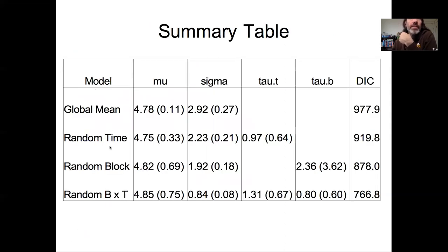This table summarizes the results from those different models. We can see that in all the models we end up with an estimate of the global mean, and those estimates don't change much from model to model. We do see though that the uncertainty in that global mean does increase as we increase the complexity of the model.